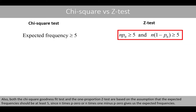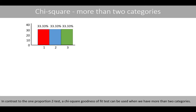Also, both the chi-square goodness of fit test and the one-proportion z-test are based on the same assumption that the expected frequencies should be at least 5, since n times p0 or n times (1 minus p0) gives us the expected frequencies. In contrast to the one-proportion z-test, a chi-square goodness of fit test can be used when we have more than two categories.